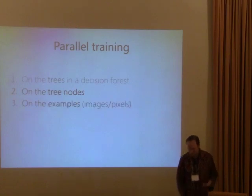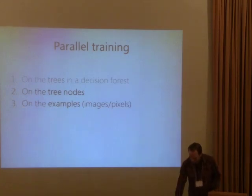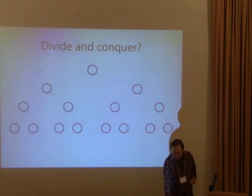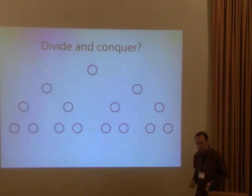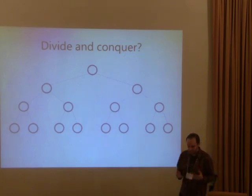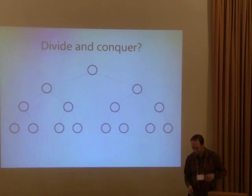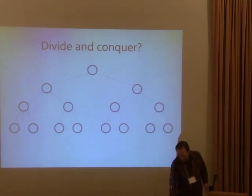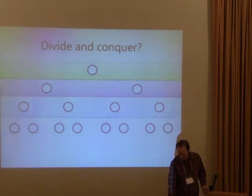We also parallelize on different training examples — individual pixels in the context of a training image — and on the features. As described, the algorithm has a divide-and-conquer flavor since for a given node, all the work done processing its children is independent. However, with around a million nodes, it would be too costly to schedule a new batch job per node. Instead, we flatten this recursion into iteration and perform the work for one level in the tree in a single job.